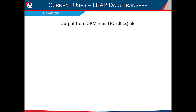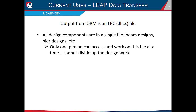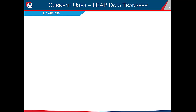The transfer does come with downsides. The output is an LBCX file — the consolidated file type — meaning all components including beam design, conspan, and pier designs in RCP are in a single file. Because of this, only one person can access and work on that file at a time, so you can't divide up the design work. Additionally, if that single file ever gets corrupt or damaged, you lose everything in that design file.